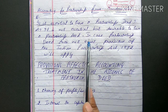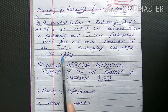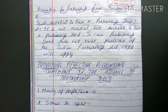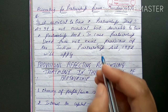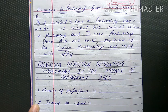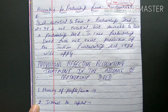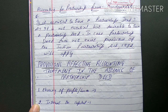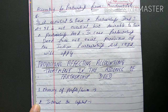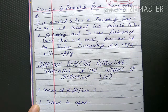In case a partnership deed does not exist, the provisions of the Indian Partnership Act 1932 will apply. If a firm has made a deed, it will operate according to that deed. If no deed has been made, the Indian Partnership Act 1932 will automatically apply to that firm, and it will function according to the rules and regulations given under that act.